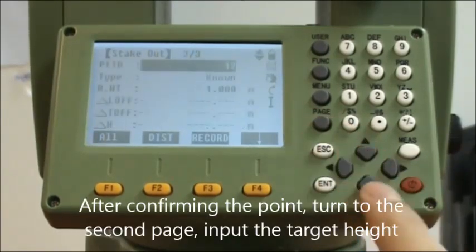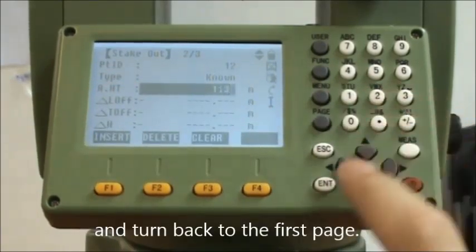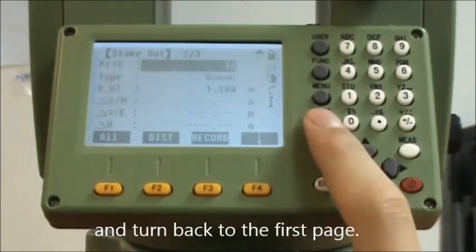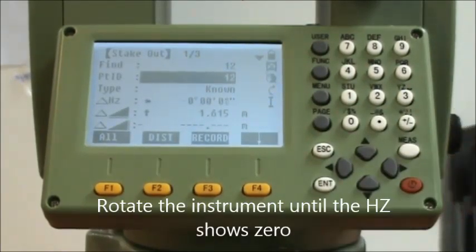After confirming the point, turn to the second page, input the target height, and turn back to the first page. Rotate the instrument until HZ shows zero.